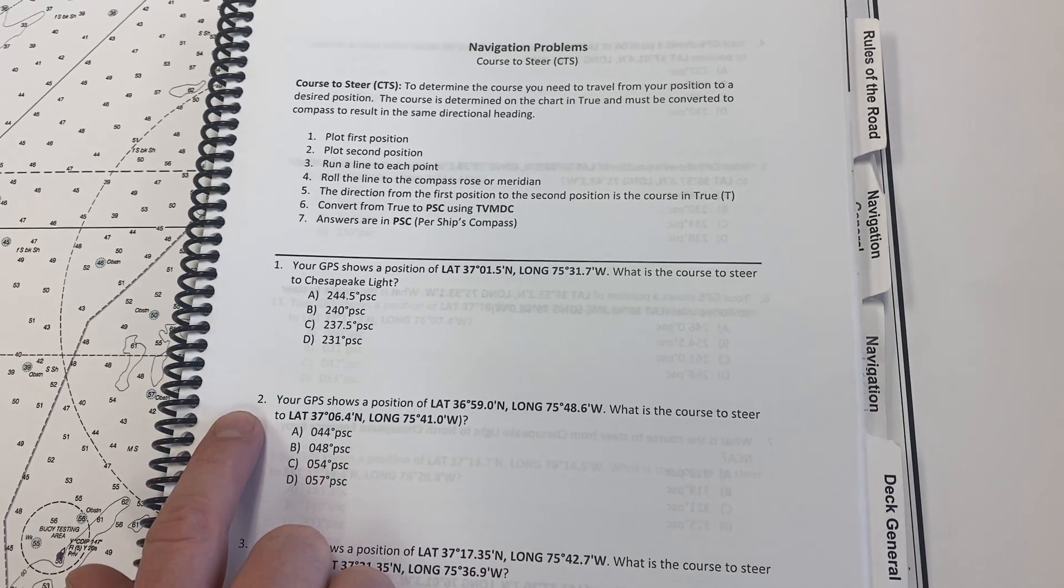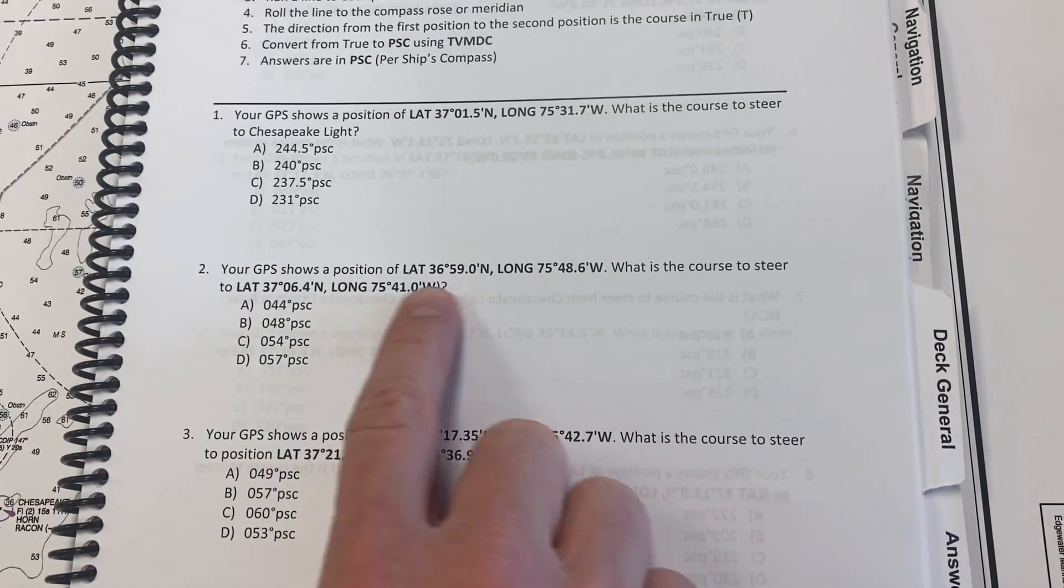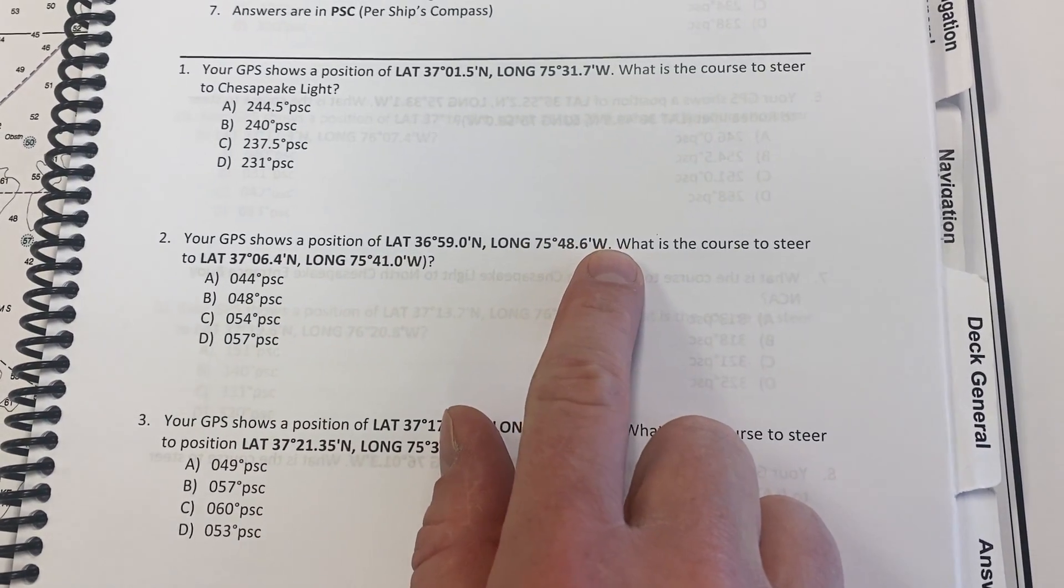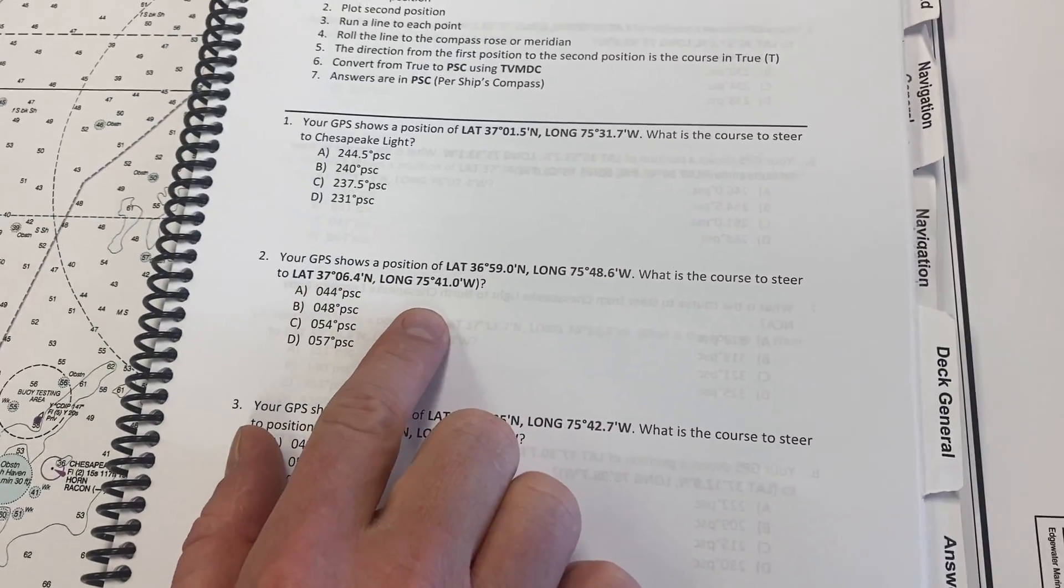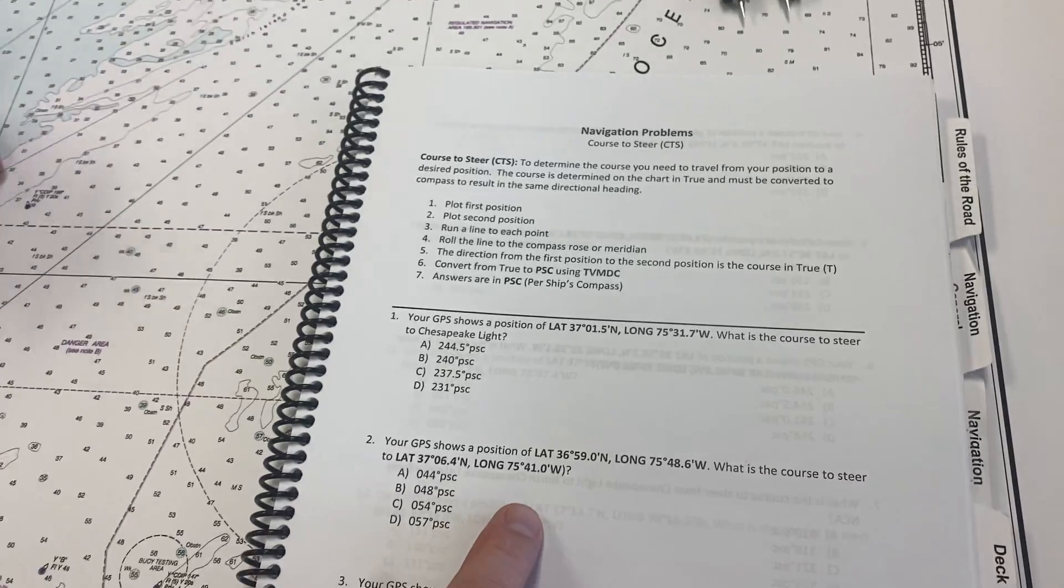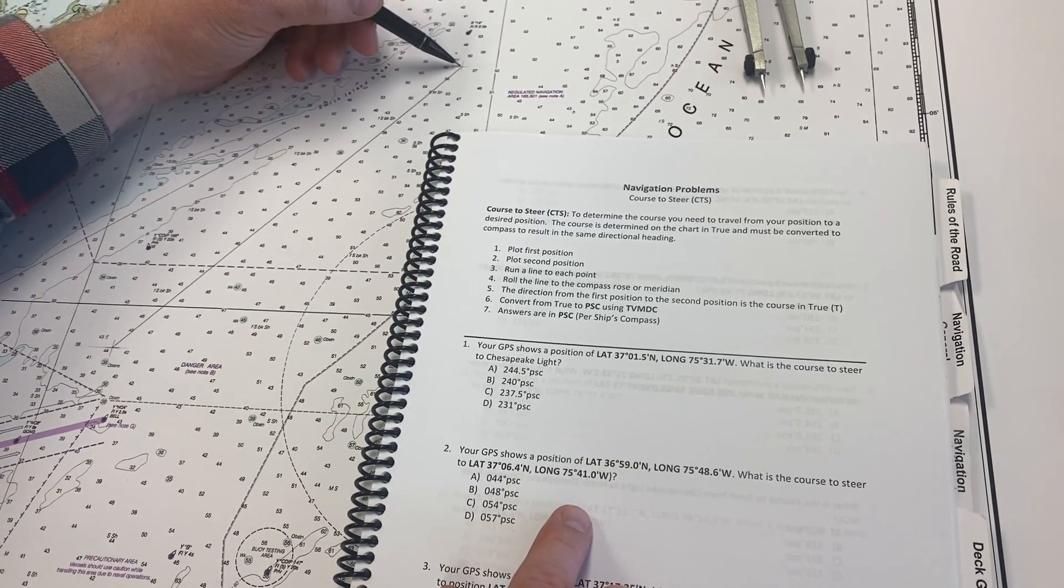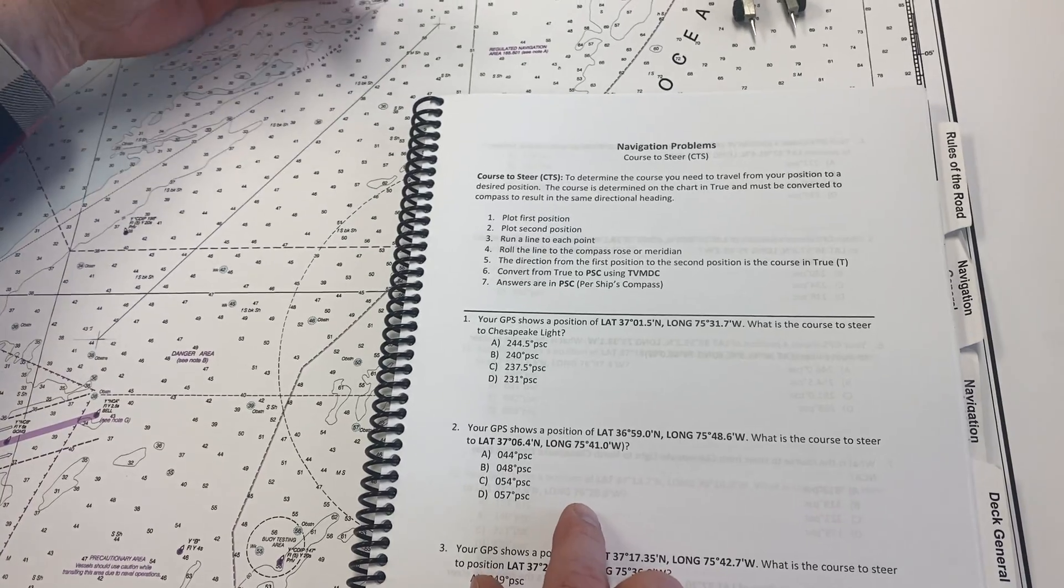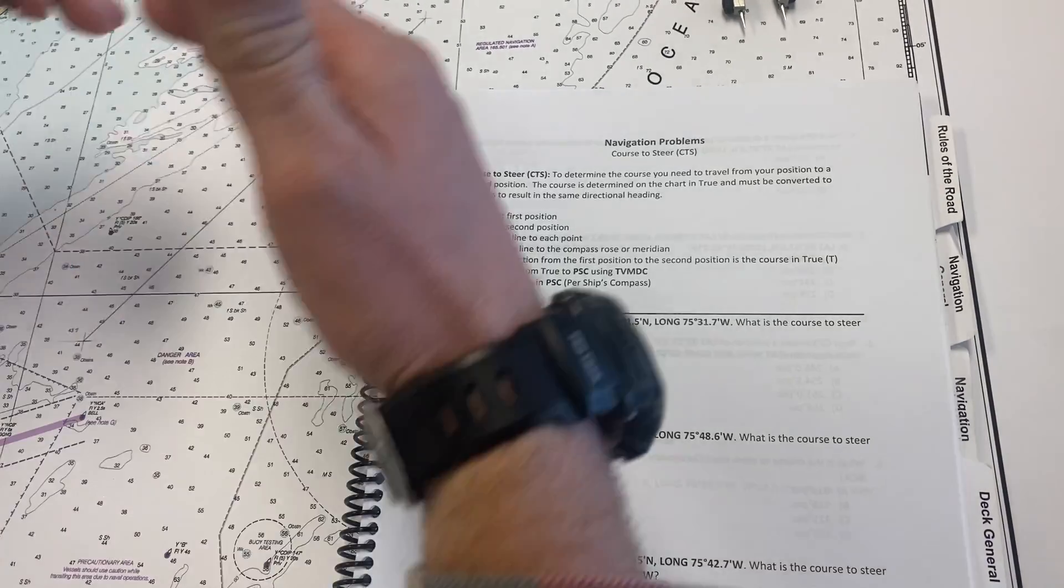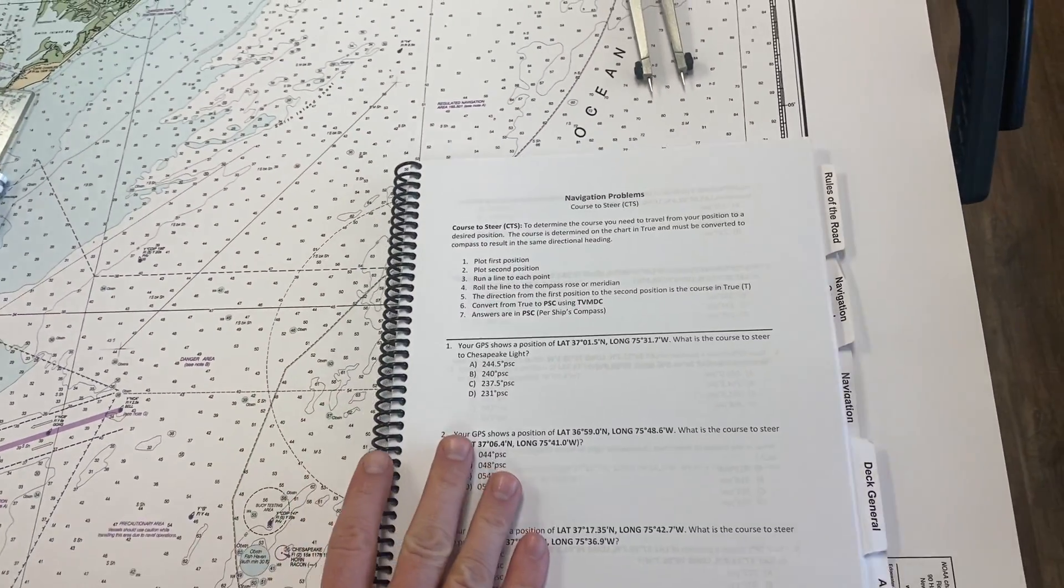All right, so we're working problem number two here where it's given us our first position which I've gone and already plotted. It's given us our second position, I've already plotted that one, and I have drawn a line in between the first point and the second point. Now if it helps, remember to write a one then a two to make sure you measure in the right direction.